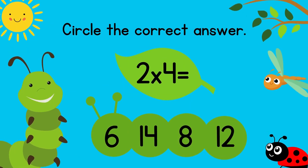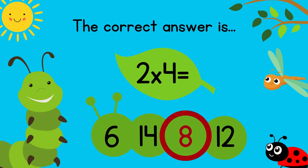Circle the correct answer. 2 times 4 equals? The correct answer is 8. Excellent!